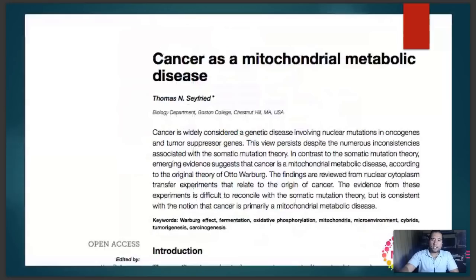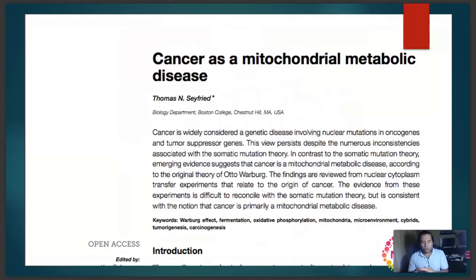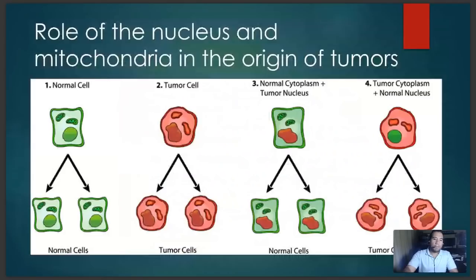Cancer is not something certain people get just because of poor luck with their genetics. There is a genetic component, but what really sets the disease in motion is inflammation and metabolic dysfunction, and that metabolic dysfunction starts in the mitochondria. We know mitochondria control apoptosis, which controls the development of cancer cells — if mitochondria are dysfunctional, they can't control apoptosis, and you end up with immortal cells that turn into cancer.